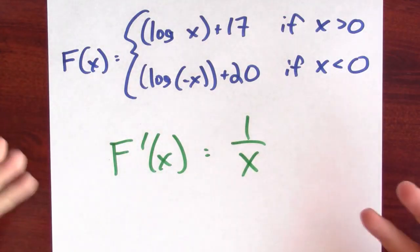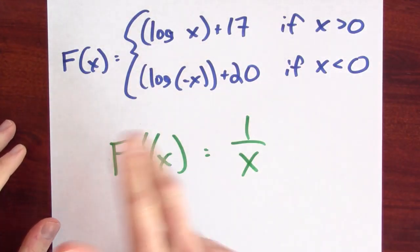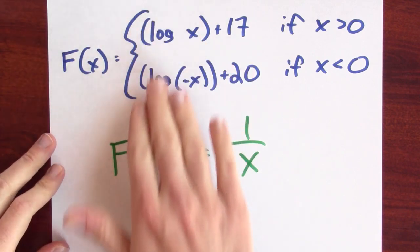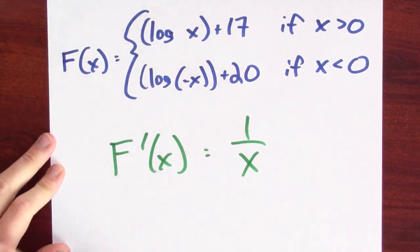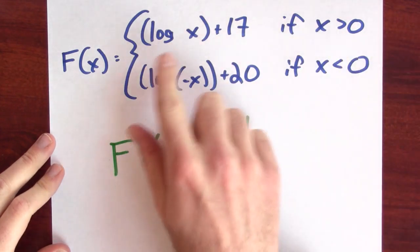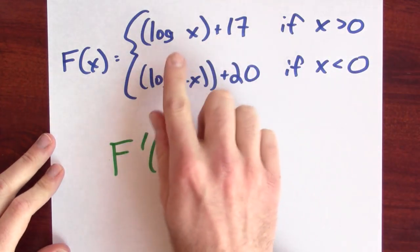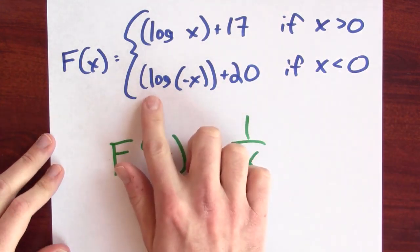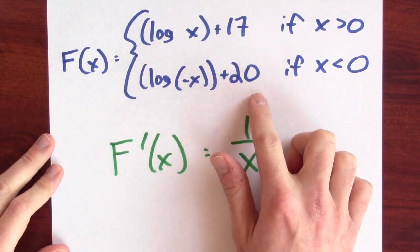But there are many more antiderivatives where those came from. For example, here's another one that doesn't fit the pattern we've seen thus far. We'll define a function F using piecewise notation. If x is positive, F will be log(x) + 17. And if x is negative, F will be log(-x) + 20.